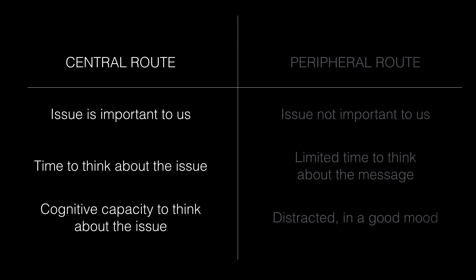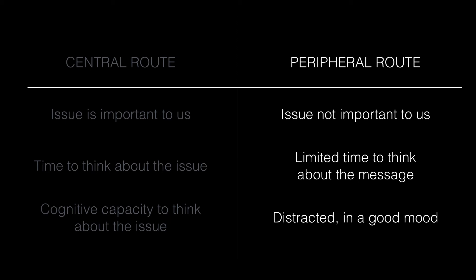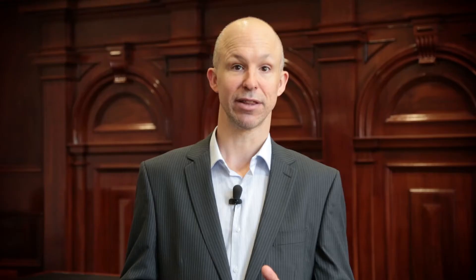So when do we use each route? We use the central route when an issue is important to us and when we have the time and the cognitive capacity to think about the issue. We tend to use the peripheral route when there's limited time to think about the message, when we're distracted, when the issue is not so important, and also — funnily enough — when we're in a good mood. One of the assumptions underlying all of these models of jury decision making is that perceivers like to put in the minimum amount of cognitive effort possible. This has led to some people referring to perceivers as cognitive misers or mental sluggards. There is an alternative perspective, however. We and some others think that we use stereotypes strategically to maximise the amount of information that can be stored in our brains under taxing conditions. Stereotypes help us encode some of the information so that we can then turn our attention to other parts of the information.